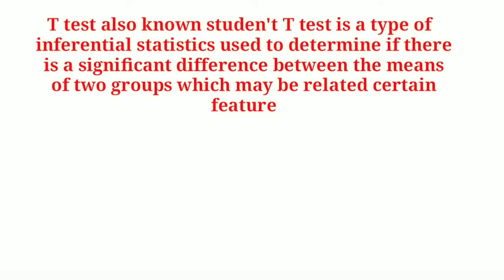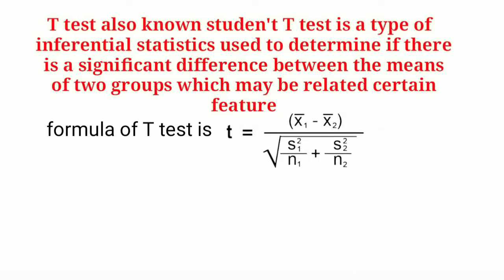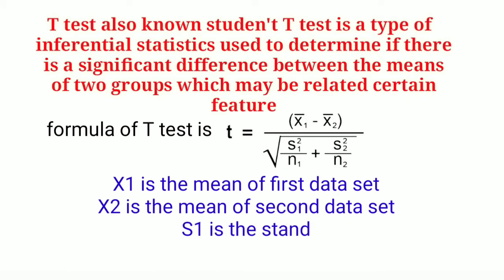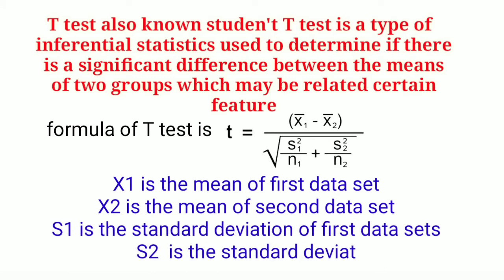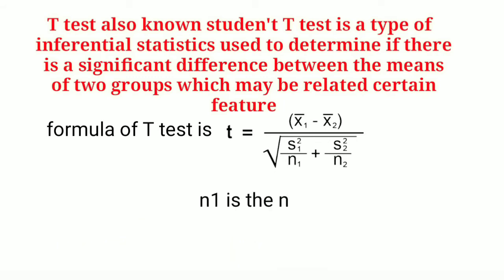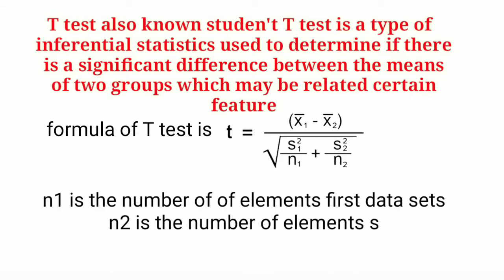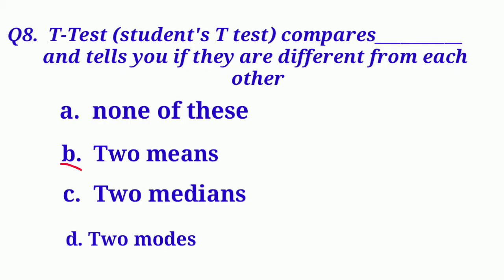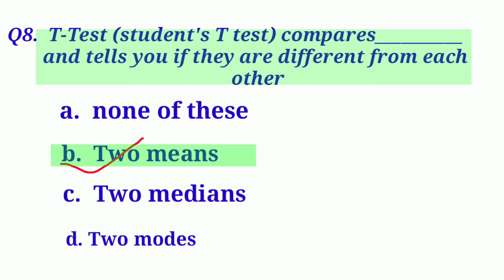The T-test, also known as the student T-test, is a type of inferential statistic used to determine if there is a significant difference between the means of two groups, which may be related in certain features. The formula of T-test is: T = (x̄₁ − x̄₂) / √(s₁²/n₁ + s₂²/n₂), where x₁ is the mean of the first data set, x₂ the mean of the second, s₁ and s₂ are the standard deviations, and n₁ and n₂ are the number of elements. So our correct option is Option B: Two means. The student T-test compares two means and tells you if they are different from each other.